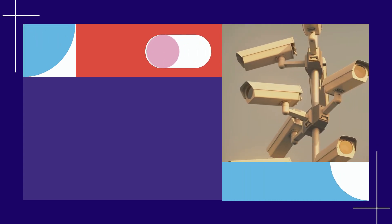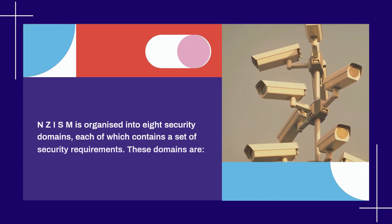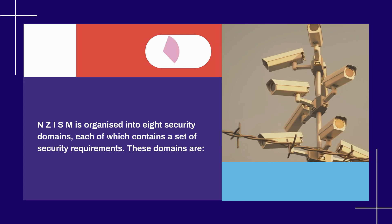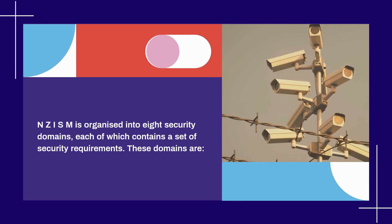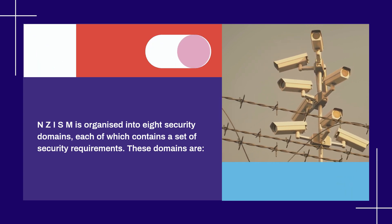NZISM is organized into 8 security domains, each of which contains a set of security requirements. These domains are: